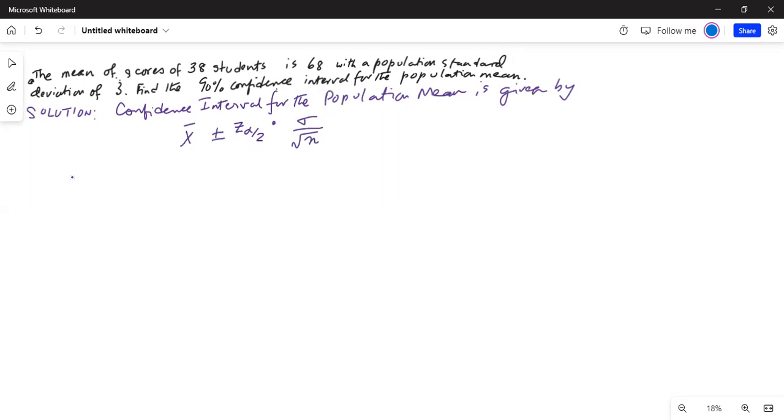Here x bar is sample mean, z alpha by 2 is the critical value of z.